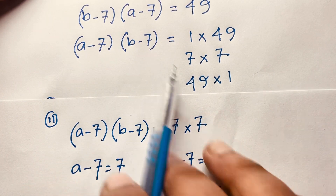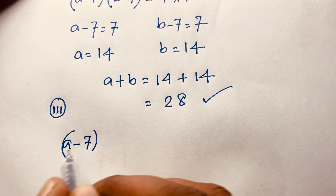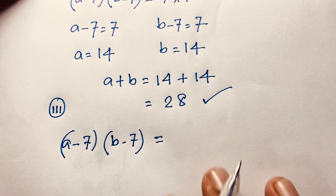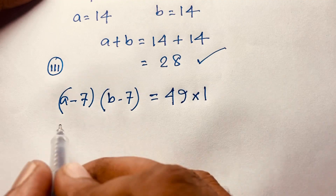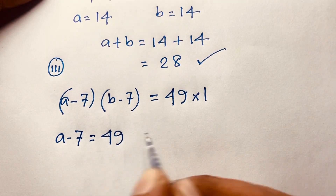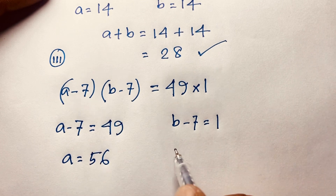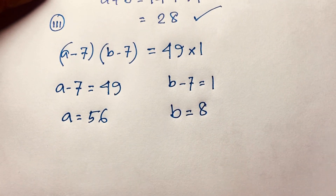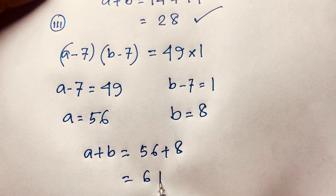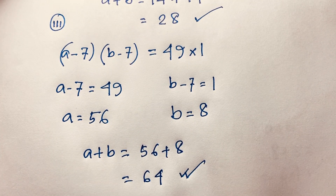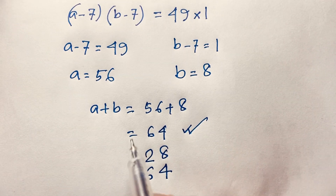Case 3: (a minus 7)(b minus 7) = 49 times 1. So a minus 7 equals 49 and b minus 7 equals 1, giving a equals 56 and b equals 8. Therefore a plus b equals 56 plus 8, which is 64. Our final answers are: a plus b equals 64, or 28, or 64.